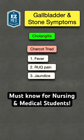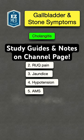Reynolds pentad may also be seen with cholangitis. This is Charcot's triad plus hypotension and altered mental status.